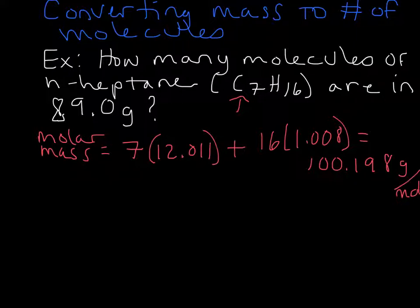So now that we have our molar mass, we're actually ready to go ahead and convert grams of n-heptane to moles of n-heptane. We're going to do this in two steps. We could do it all in one step, but it's easier to see the first time through doing it in two. So let's go ahead and take our 89.0 grams of n-heptane and convert it to moles.